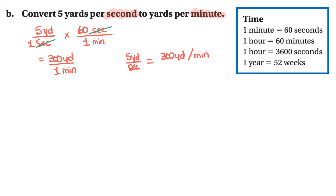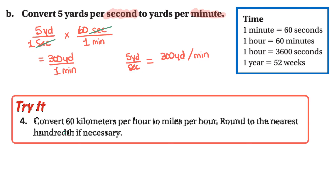Here is your last try question. We want to convert 60 kilometers per hour to miles per hour. Since both use hours, we only need to convert kilometers into miles. Round to the nearest hundredth - two decimal places - if necessary.